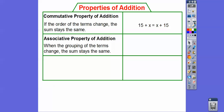The associative property is always when they use parentheses. The associative property of addition says when the grouping of the terms changes, the sum stays the same. This always deals with parentheses. So 4 plus, open parentheses, 6 plus y, would give us an equivalent statement if we added the 4 plus 6 first and then added the y. Four plus six is 10, and 10 plus a number is really easy — it gives us a nice compatible number.